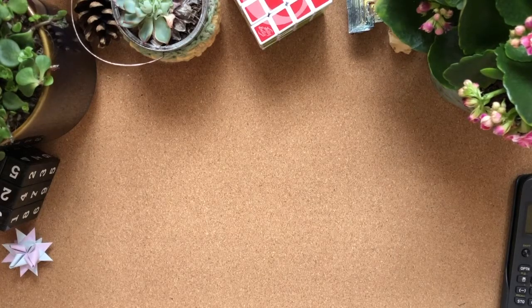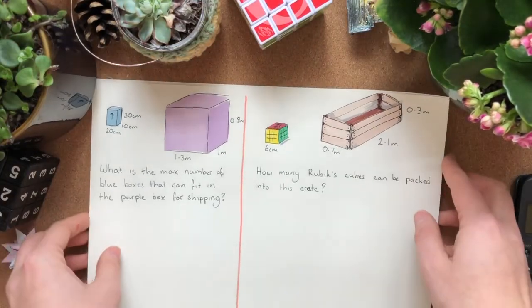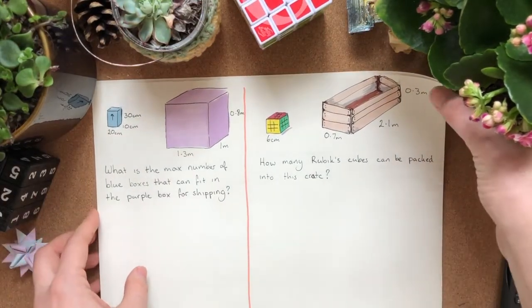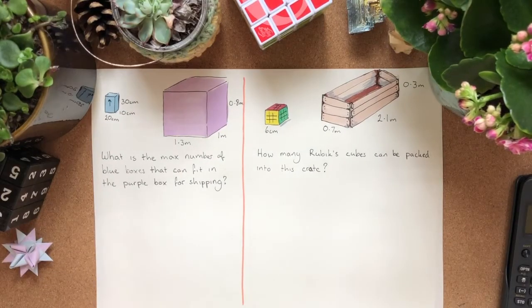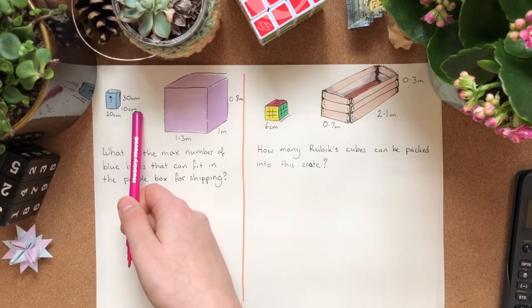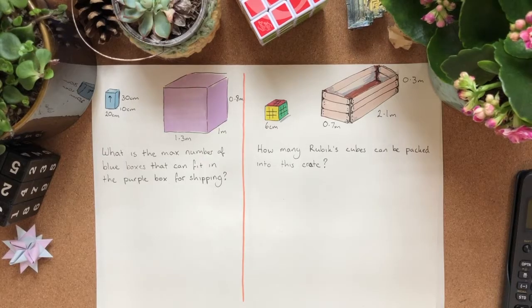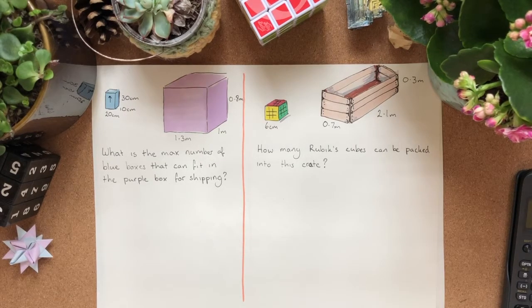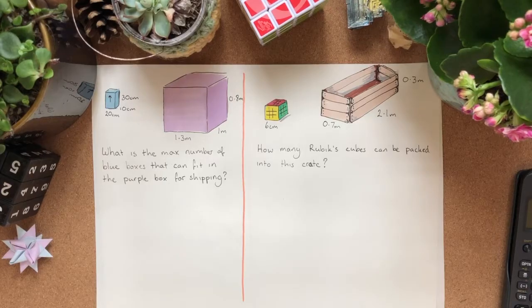But unfortunately, when you're in an assessment, you will be asked this written down on a piece of paper. So it's important to be able to visualize what's going on and try and figure out what's happening. So, first of all, we've got this question here. We've got a small box with twenty, ten and thirty. As it's a length, width and height, it really doesn't matter which way round you call those. And some people call them breadth. It doesn't make a difference. But we've got three dimensions.